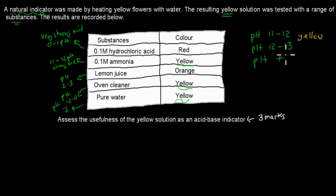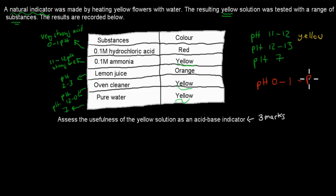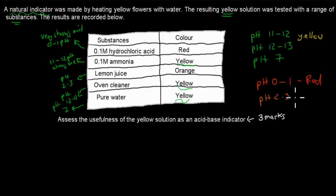The acids turned different colors. The very strong acid — hydrochloric acid at pH 0 to 1 — turned red, whereas lemon juice at pH 2 to 3, being a weaker acid, turned orange. So that's all the facts we can gather from that table.